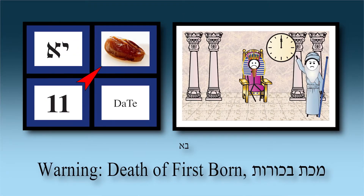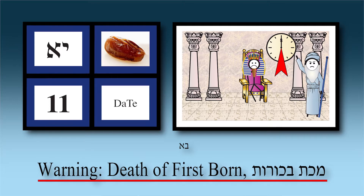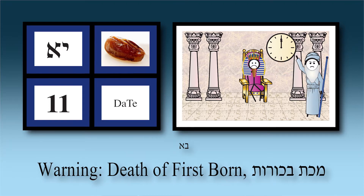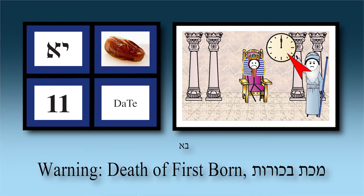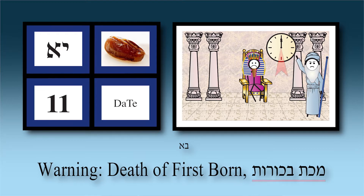In chapter eleven — the simon is 'date.' There's a warning from Moshe Rabbeinu to Pharaoh of Makkah Bechorot — death of the firstborn. Moshe instructs Bnei Yisrael to borrow expensive clothing, gold, silver, and jewelry from their Egyptian neighbors. He tells Pharaoh: around midnight there's going to be a Makkah that will kill every single firstborn, including your own firstborn child, Pharaoh. Pharaoh still refuses. In the picture Moshe doesn't look happy — he's pointing at a clock near midnight. Pharaoh doesn't look happy either.